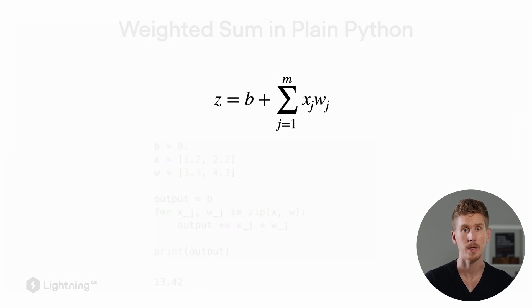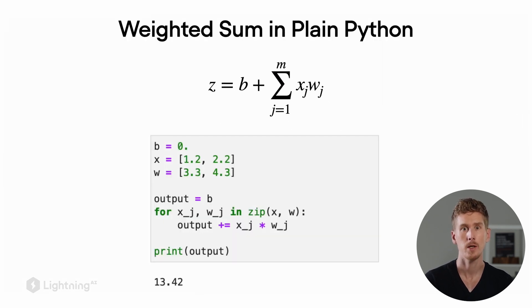Now if I want to compute this weighted sum in Python, I can do it as follows using a Python list. So here I have one training example with two features and the two corresponding weights. What I essentially do is I set my output to b and then I loop over all the values xj and wj, multiply them and add them to the output. And then the result is this weighted sum, here in this case 13.42.